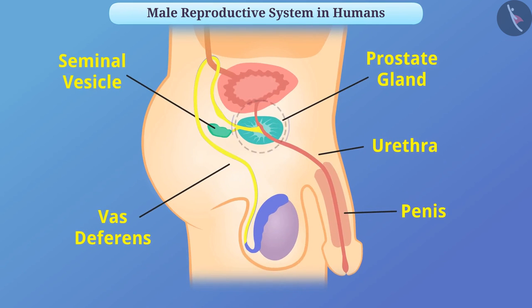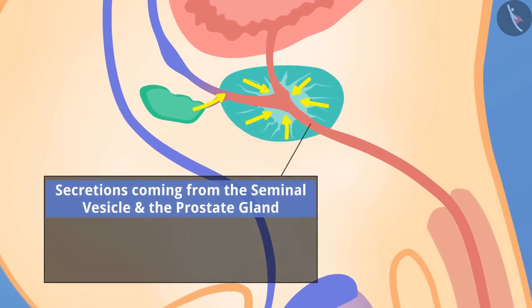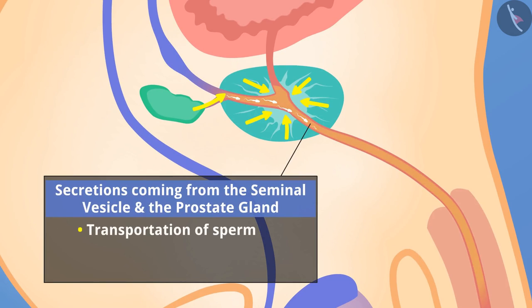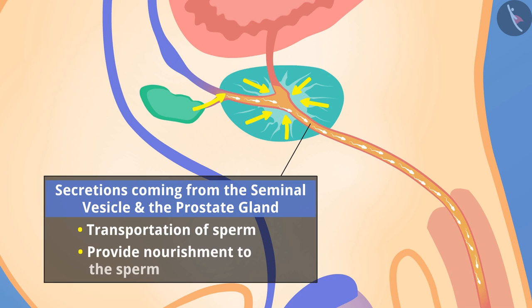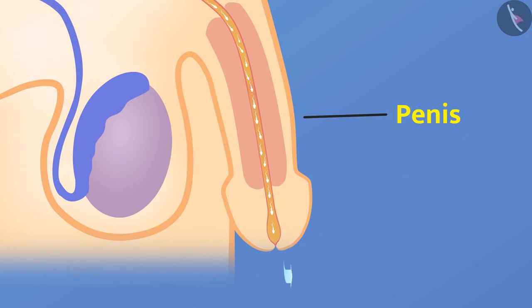The vas deferens joins with the tube coming from the bladder to form a joint tube. The secretions coming from the seminal vesicle and the prostate gland provide a fluid medium for the transportation of sperm and also provide nourishment to the sperm. The penis transports this secretion to the female reproductive organ.